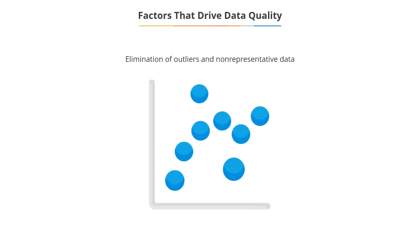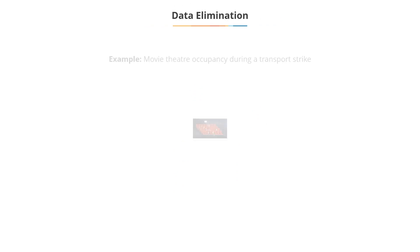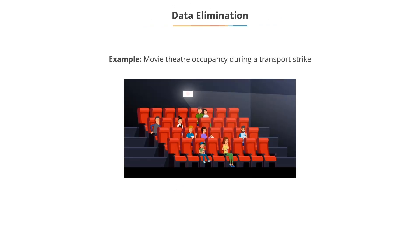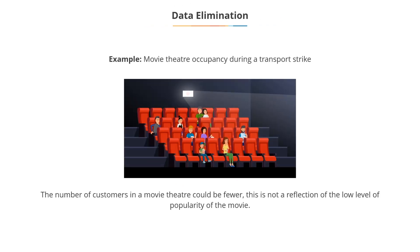Elimination of outliers or data emerging from situations that are not representative of reality. For example, on days when there is a transport strike, the number of customers in a movie theater could be fewer. This number is not a reflection of the low level of popularity of the movie. Therefore, such values should be omitted.